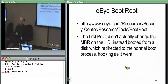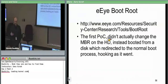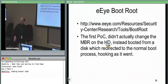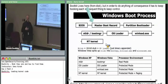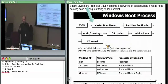EI boot root was the first proof of concept targeting rootkit-like behavior. It didn't actually install to the hard drive or overwrite your MBR directly. Instead, it used a boot CD — you boot off the CD, and at the BIOS level you've configured it to read from CD sector zero rather than hard drive sector zero. The CD has its own compromised master boot record.